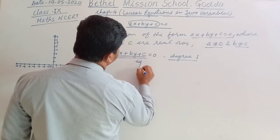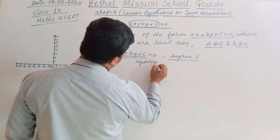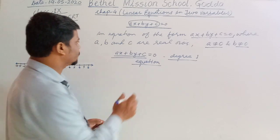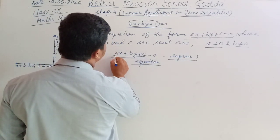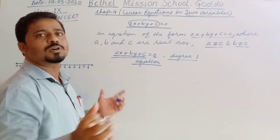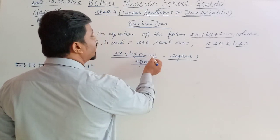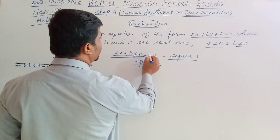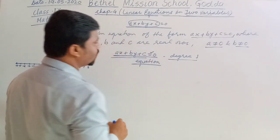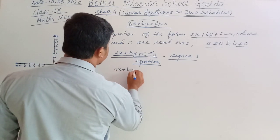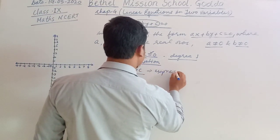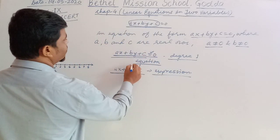And we say Equation. So, what is the difference between Equation and Expression? Equation means when we compare two quantities. You can see here: Ax plus By plus C is one quantity, another quantity is 0, and they are compared with equal to. That's why this whole thing is called an Equation. And when you write Ax plus By plus C, this is called an Expression.